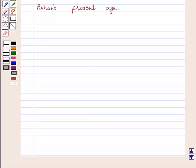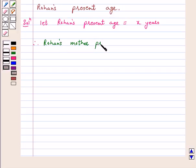Let's start the solution. Let Rohan's present age equal X years. Therefore, Rohan's mother's present age is equal to X plus 26 years, as she is 26 years older than him.